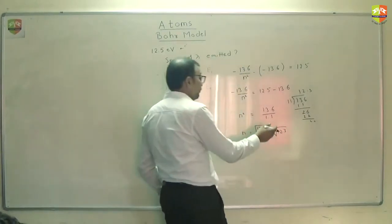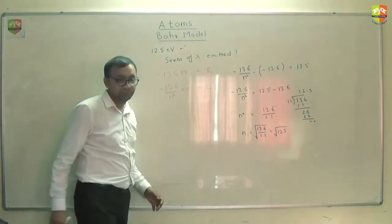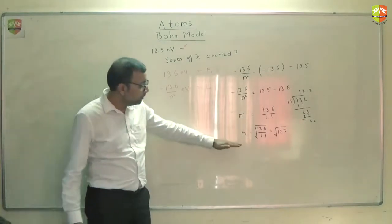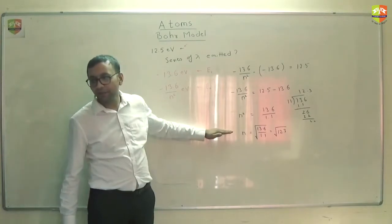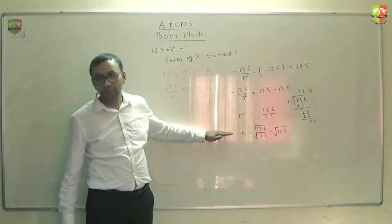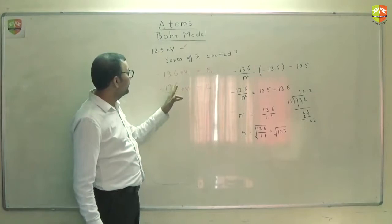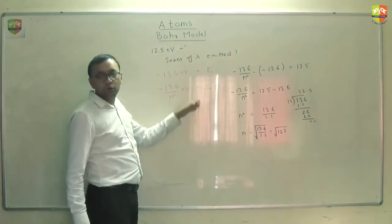Don't waste any time. Practice lot of questions. 13.6 divided by 1.1 roughly is around 12.3. This is under root 12.3. Now which integer comes close to this? 3. n equal to 3. It will not be able to reach 4, so it will come back to 3 and stay there. Are you getting it? So after absorbing this much, it will not be able to go to 4, so it will stay at the next possible level.